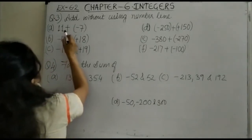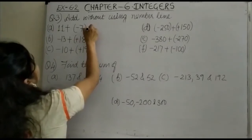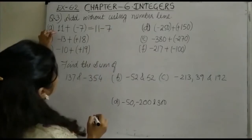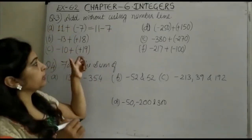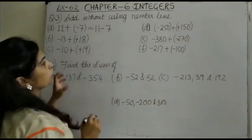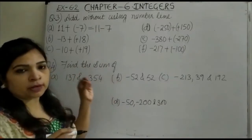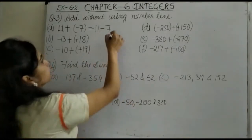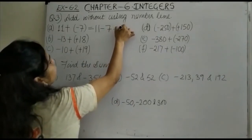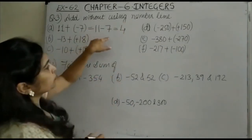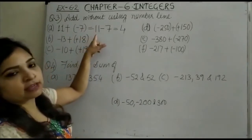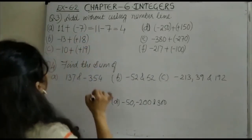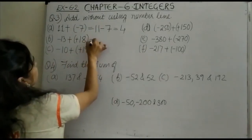The first question is 11 + (-7), which can be written as 11 - 7. You can see 11 is positive and -7 is negative. As I told you, positive and negative always means you subtract, so this will be 4. The bigger number is 11, which is positive, so the answer is positive 4.